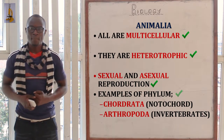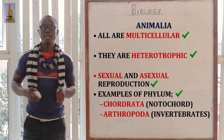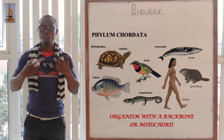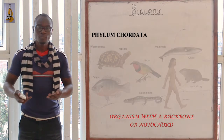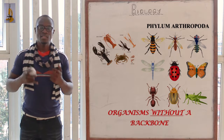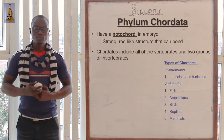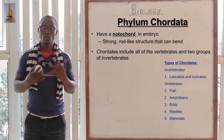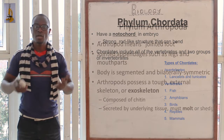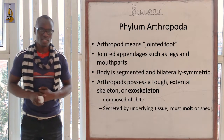Examples of phyla under kingdom Animalia include phylum Chordata, which comprises organisms that have a backbone, and phylum Arthropoda, which comprises organisms without a backbone. In simple terms, phylum Chordata organisms are called vertebrates, while phylum Arthropoda organisms are called invertebrates.